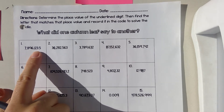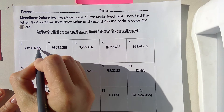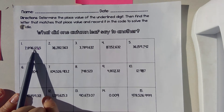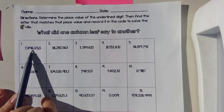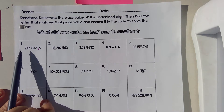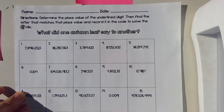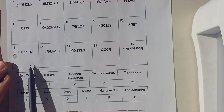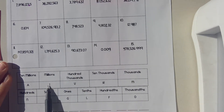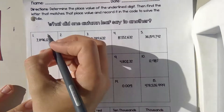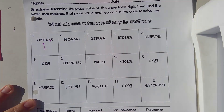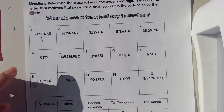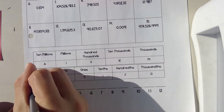In number one, here's my decimal. So this would be ones, tens, hundreds, thousands, ten thousands, hundred thousands, millions. So these are millions. If I go down here and look at my key for my place values, millions is an I. I'm going to put the letter I here for number one.